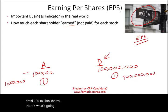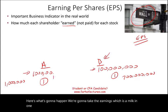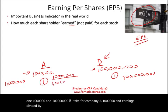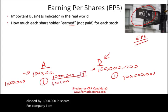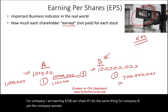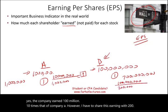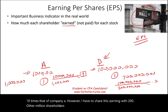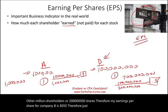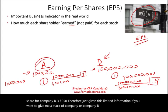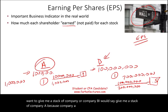Here's what happens. We take the earnings and divide by shares. For Company A: $1 million in earnings divided by 1 million shares gives $1 per share. For Company B: yes, the company earned $100 million — 10 times that of Company A — however, you have to share that earning with 200 million shareholders, so earnings per share for Company B is only $0.50. Therefore, given this information, I'd choose a share of Company A, which earns $1 per share on average.